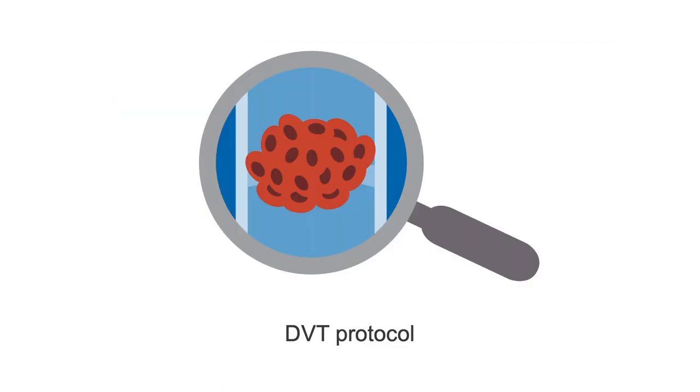Assessment begins with a deep vein thrombosis, or DVT, protocol to make sure that blood flow from the fistula has a clear path back to the heart. This is the same DVT protocol that we learned about earlier.